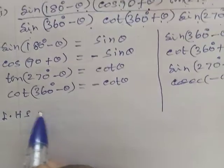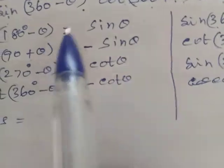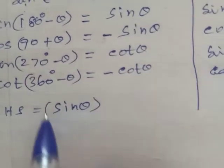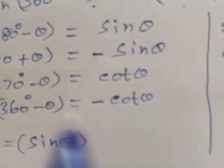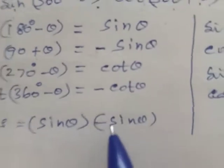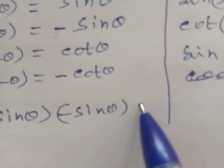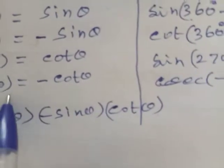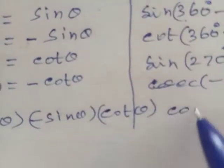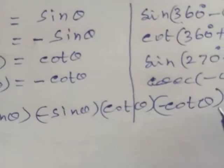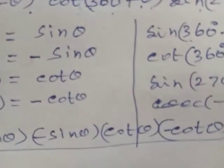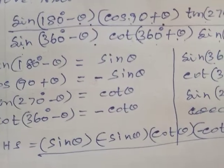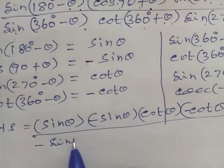So LHS equals Sin(180-θ), where Sin(180-θ) equals Sin θ. Cos(90+θ) is equal to minus Sin θ. Sin(270-θ) is equal to minus Cos θ. Cos(360-θ) is equal to Cos θ. And Sin(360-θ) is equal to minus Sin θ.